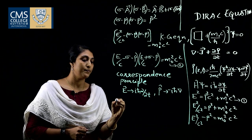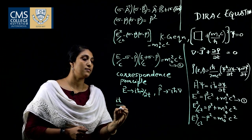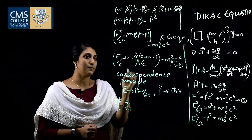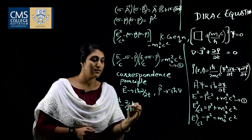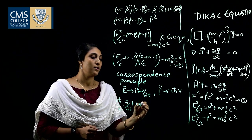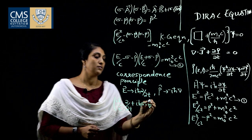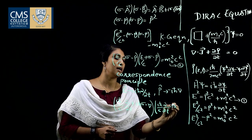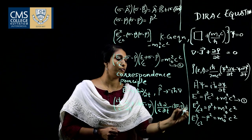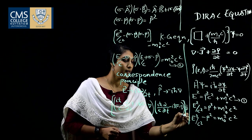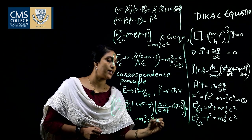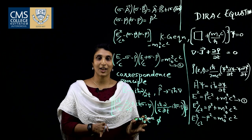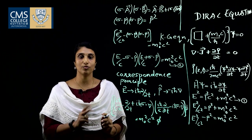Then this equation can be written as (iℏ/c ∂/∂t + iℏσ·∇)(iℏ/c ∂/∂t − iℏσ·∇) acting on φ equals m₀²c²φ, since p = −iℏ∇, so minus times minus gives plus. Now we have a second-order differential equation, and this second-order differential equation is equivalent to two first-order equations.